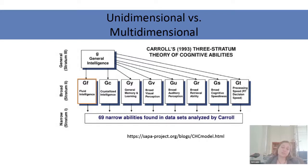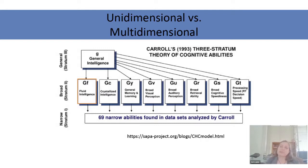To get a good measure of fluid intelligence or general reasoning, you need to measure different forms of reasoning so that you can average away all those specific influences of familiarity or a particular skill with analogies.